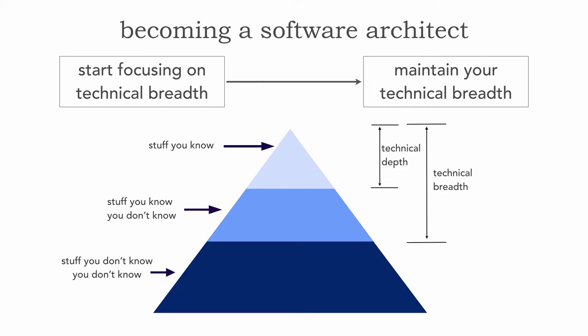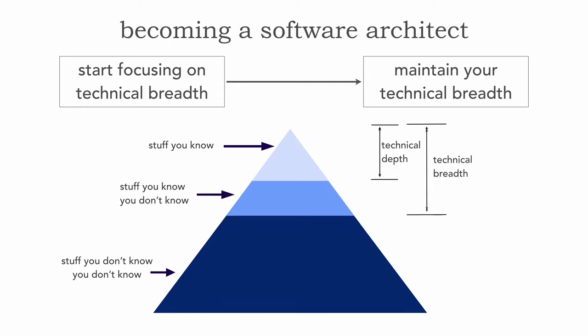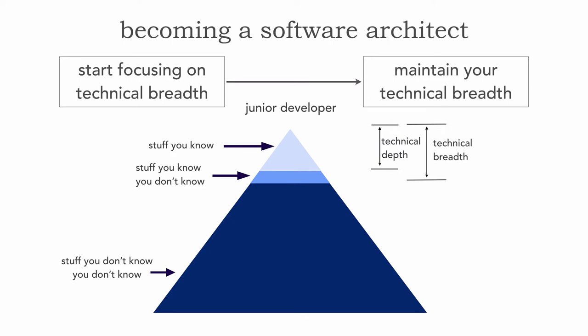What I'd like to do in this lesson is show you how this triangle of knowledge changes in the roadmap to becoming a software architect. Starting out at the beginning of your career as a junior developer, notice that the real focus is at the top of the triangle — the stuff you know — whereas the stuff you know you don't know is fairly small. Both the technical depth and technical breadth lines are fairly close together, meaning we don't have a whole lot of technical breadth.